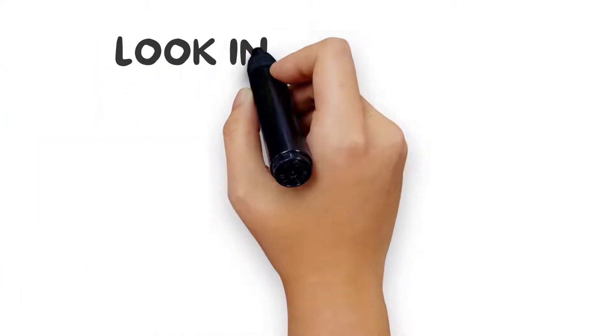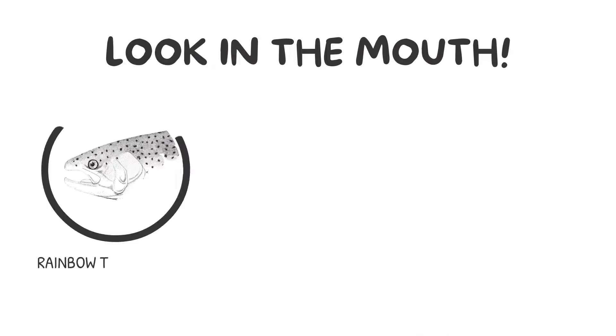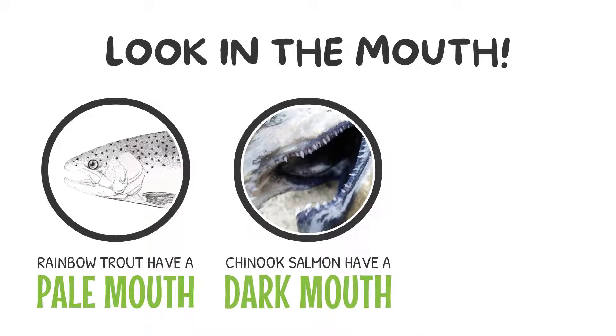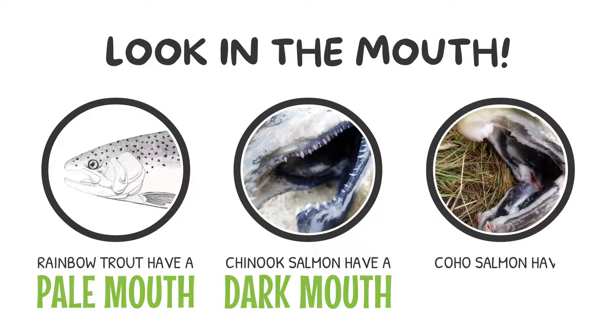Also, look in the mouth. Rainbow trout have a pale mouth while chinook salmon have a dark mouth and coho salmon have pale gums in a dark mouth.